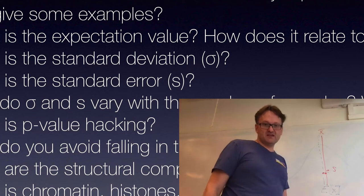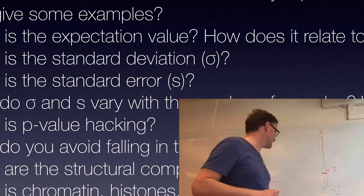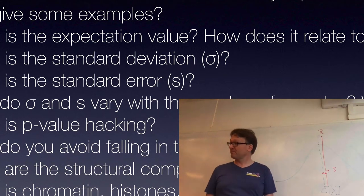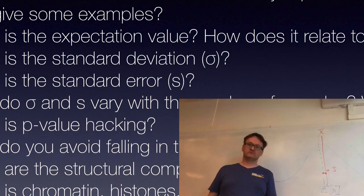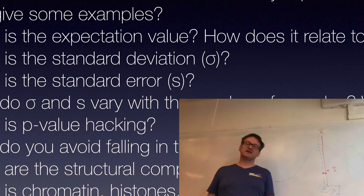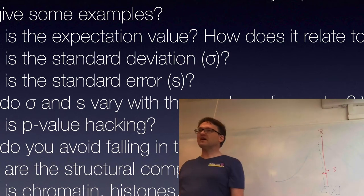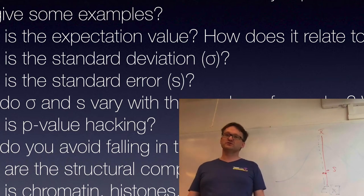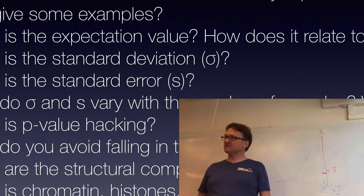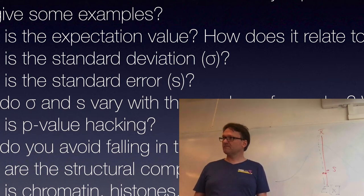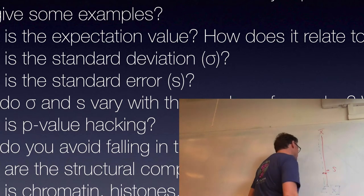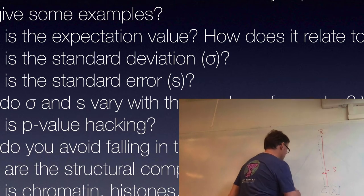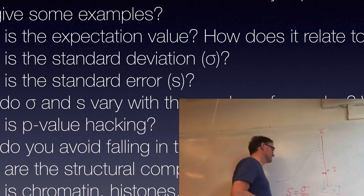How do sigma and S vary with the number of samples, and why? Sigma doesn't vary because it describes the underlying distribution of the population — it's a property of a sample. If I pull one million samples, I'm just doing the experiment one million times; it's still a property of each individual sample. S, on the other hand, drops roughly as sigma divided by the square root of n, the number of samples, at least if they're independent.